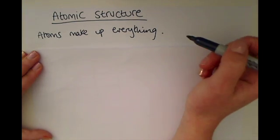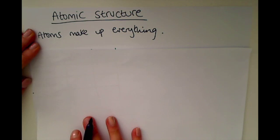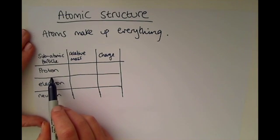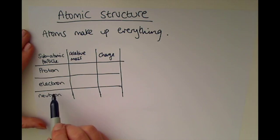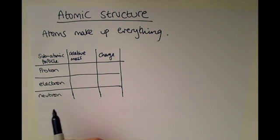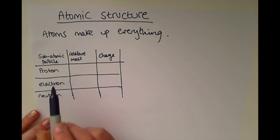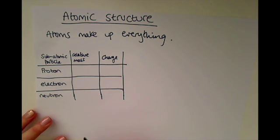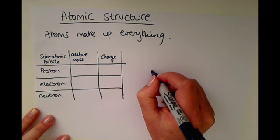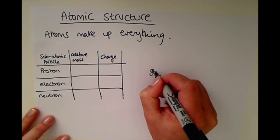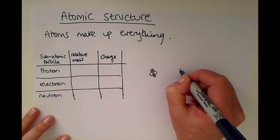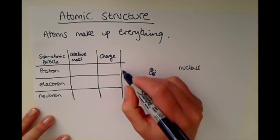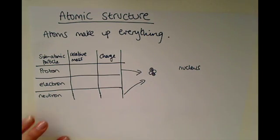We need to know what atoms are made up of. There are three basic components of an atom: the first one is the proton, then we have the electron, and the neutron. These are the subatomic particles — the even smaller bits inside the atom. If we represent an atom as a diagram, we show some particles in the middle, which is the nucleus of the atom — the middle of the atom — and that contains the protons and neutrons.